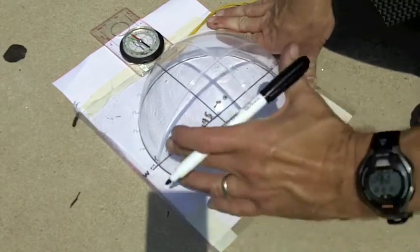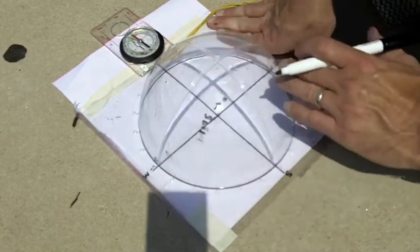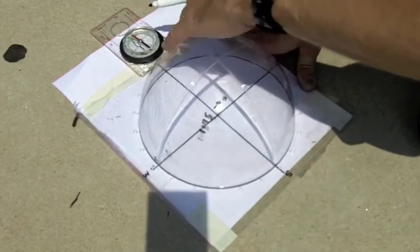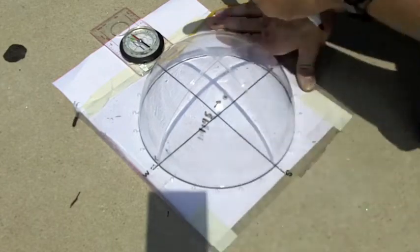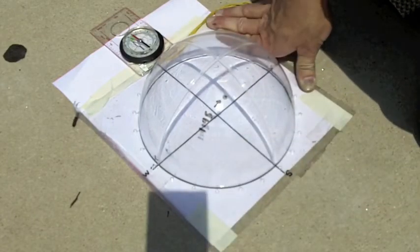One way to check if you're doing it right: all of your marks should be somewhere on the south side of the dome. If you've got any marks up here, you probably don't have things lined up. Just make sure the ground is level and that's lined up with north, and you'll be fine.